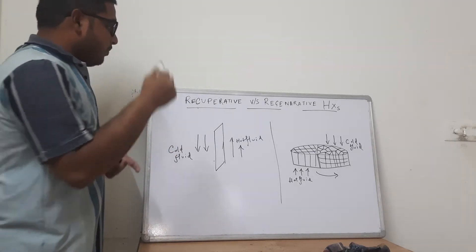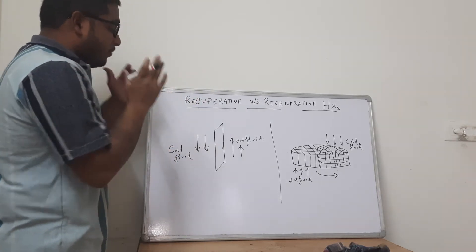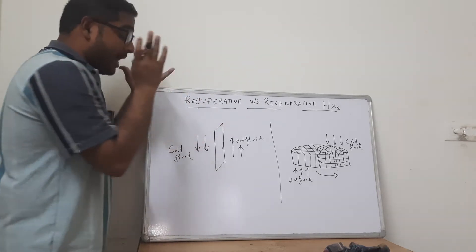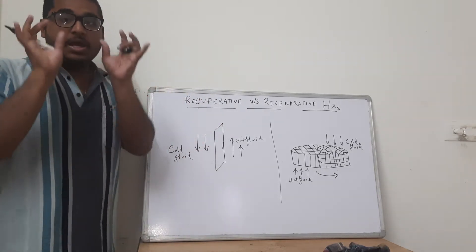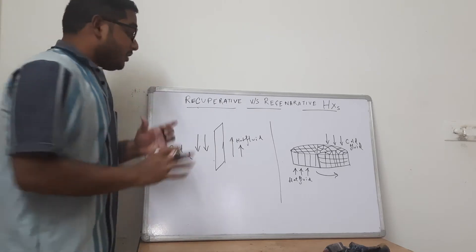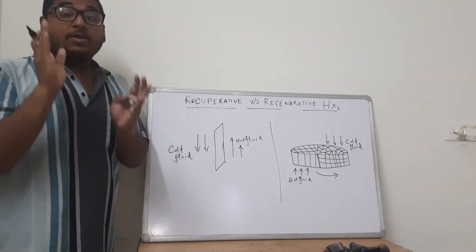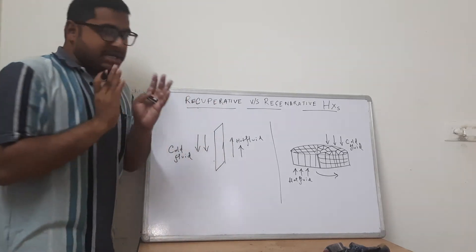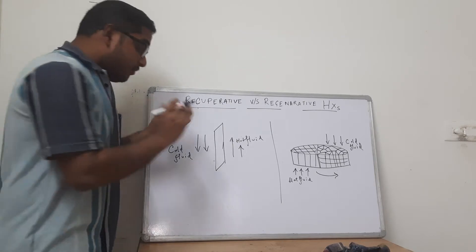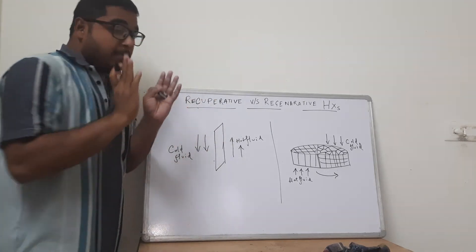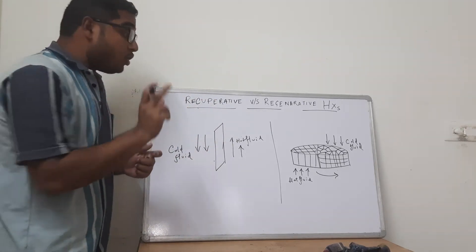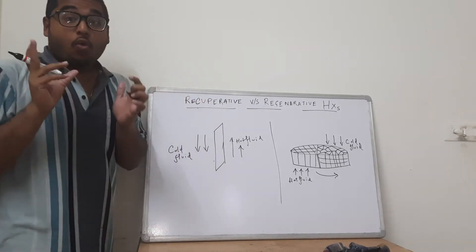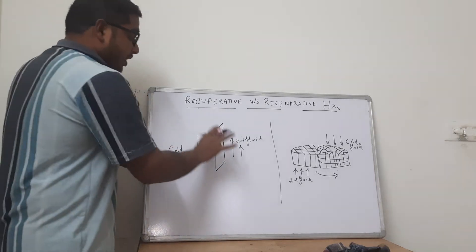Recuperative type of heat exchanger means, in simple terms, a type of heat exchanger wherein the hot fluid and the cold fluid flow simultaneously in parallel or anti-parallel directions to each other without coming in direct contact with one another.